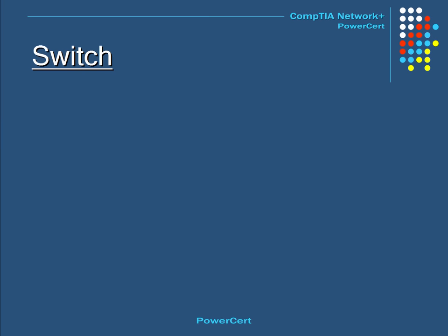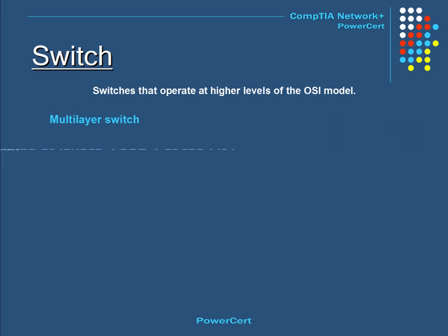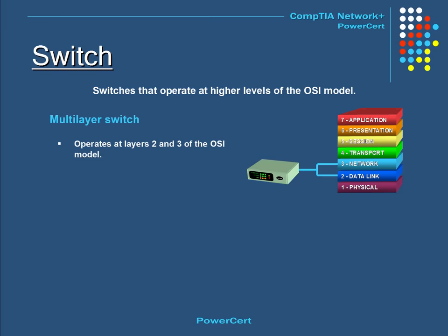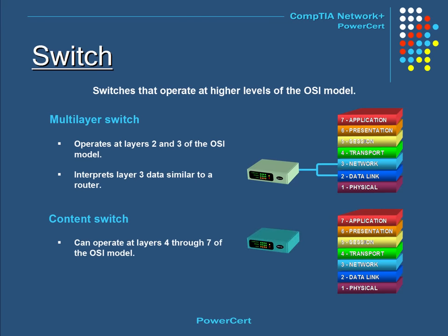Regular switches operate at Layer 2 of the OSI model. But there are other types of switches that operate at higher levels. One is called a multi-layer switch, which can operate at Layer 2 and Layer 3 of the OSI model, and is able to interpret Layer 3 data similar to a router. Another type is called a content switch, which can operate at Layers 4 through 7 of the OSI model, performing load balancing and advanced filtering. These switches are also very expensive.